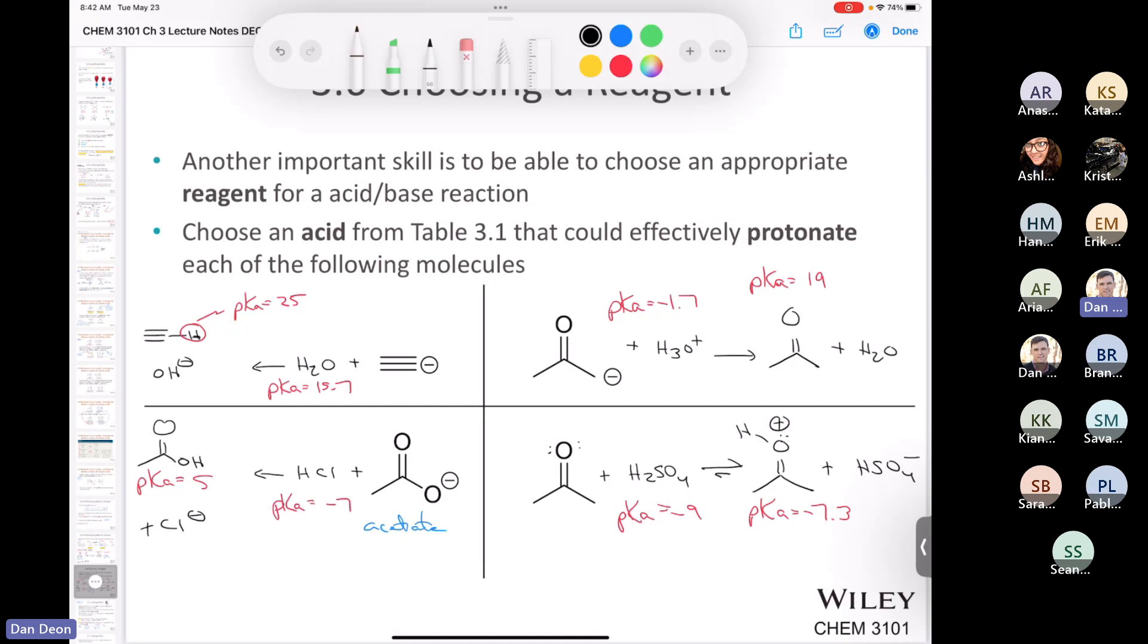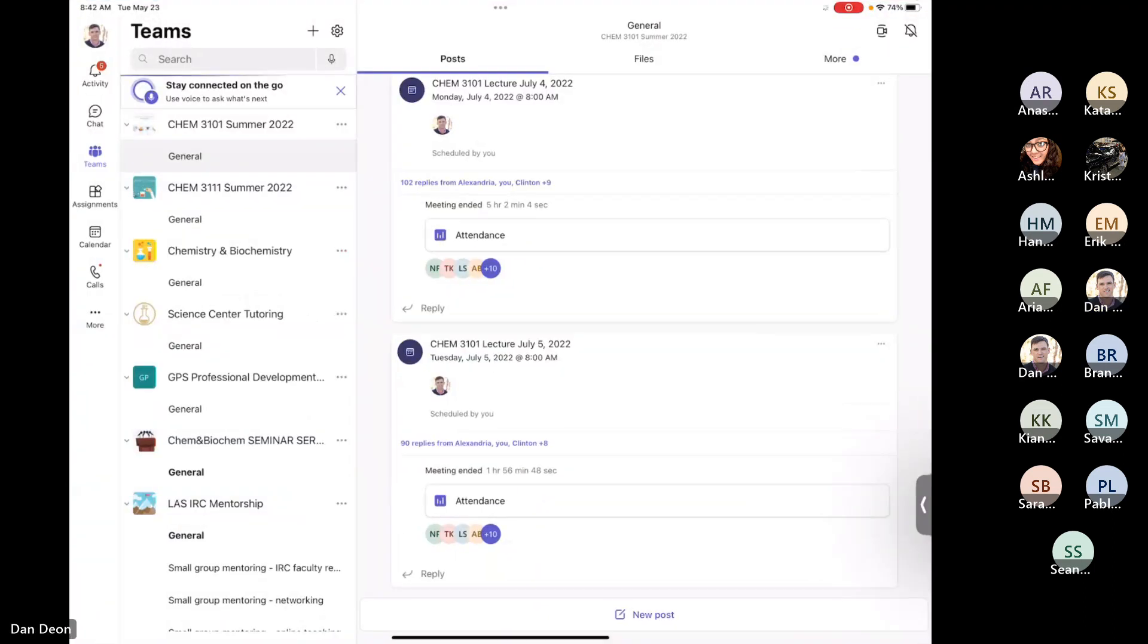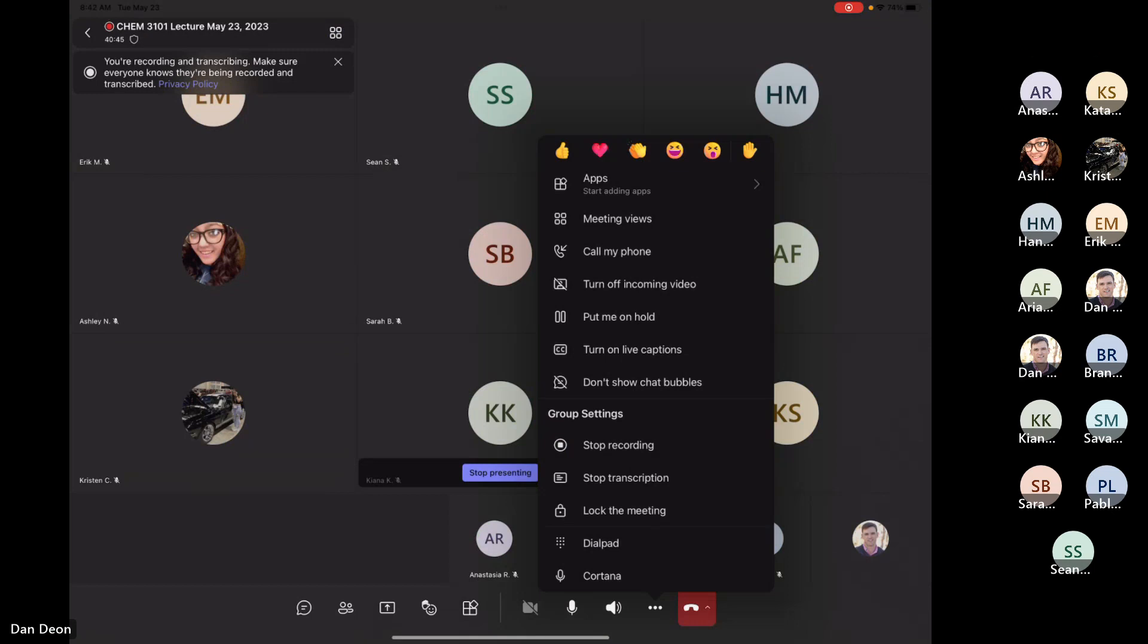And so again, you can see why it's not the greatest question. What I would do is I would give you a solvent and I would say, or I'd give you an acid and say, would this be appropriate to protonate this? And then you would have to answer yes or no. Just like the last question that we looked at in the quiz review. And that covers all of chapter three.